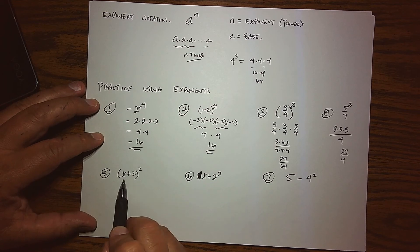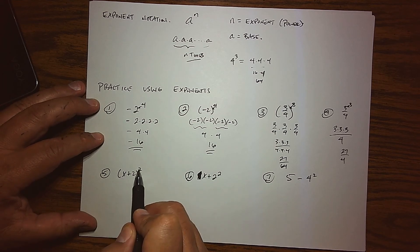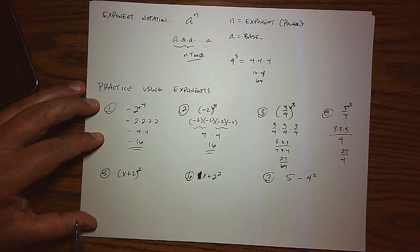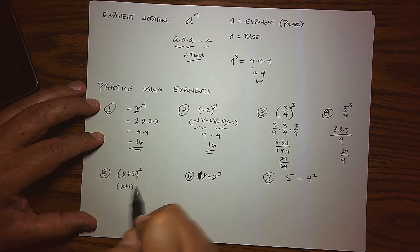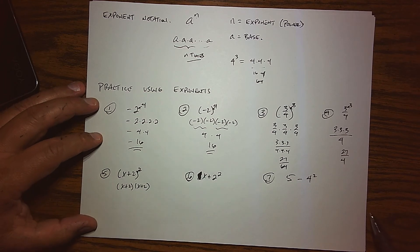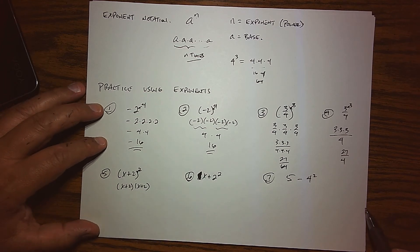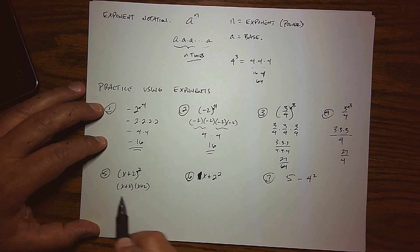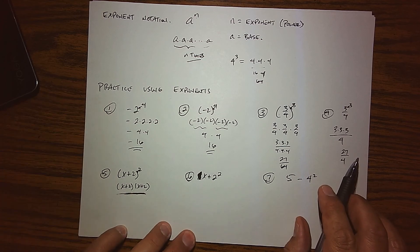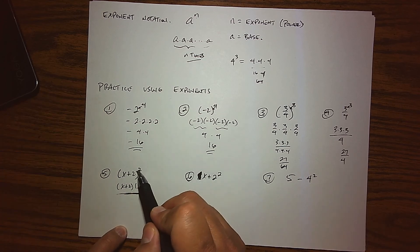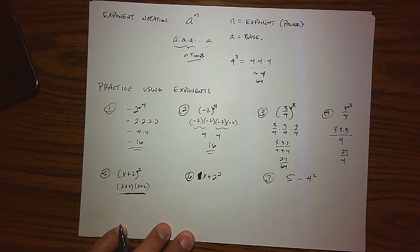A couple more examples. Here, x plus 2 is in parentheses, and the exponent 2 is on top of that. So the base is x plus 2, and we're being asked to multiply it by itself two times: x plus 2 times x plus 2. I'll leave that there — we'll visit expanding this later in the course or in Math 120. But here we're just trying to get a feel for the relationship between the exponent and the base.